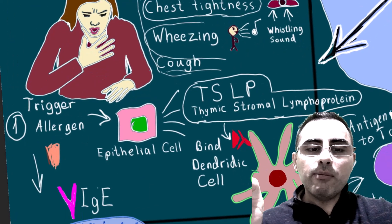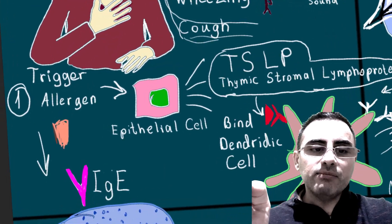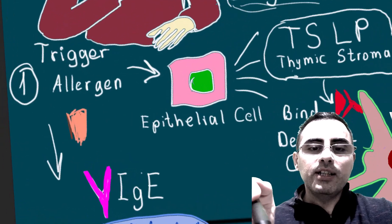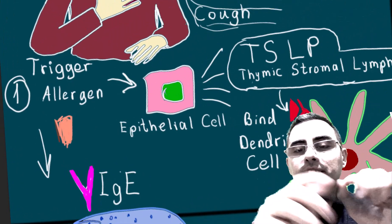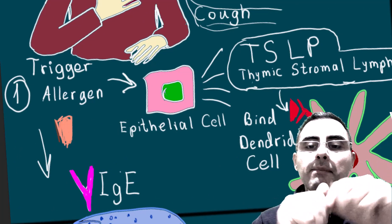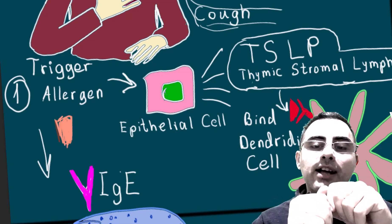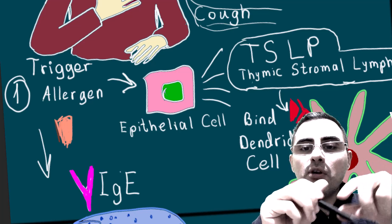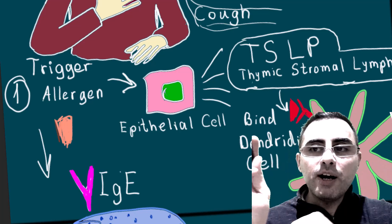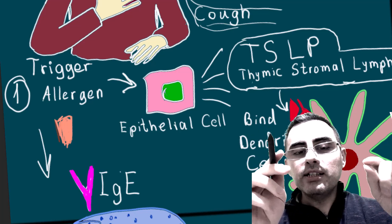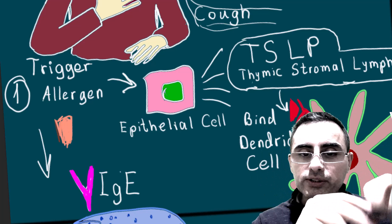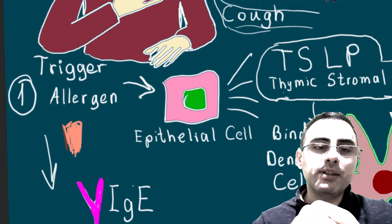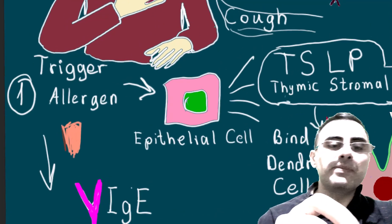Now let's talk about the mechanism — this is very important because we need to understand the mechanism of the new drug tezepelumab as well as the conventional treatments for asthma.